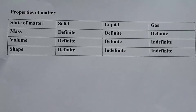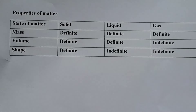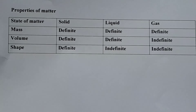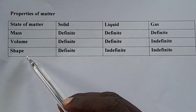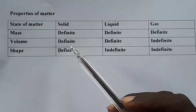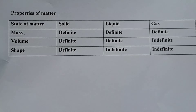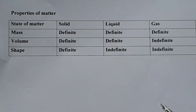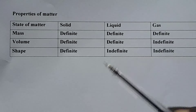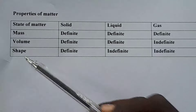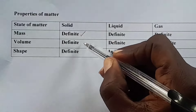So we have seen the states of matter and that they are interconvertible. Now let's look at the properties of matter. The three states of matter are solid, liquid, and gas. During the exam you can be asked to give two properties of a solid, gas, or liquid. The properties we consider are mass, volume, and shape. For solids: they have definite mass, definite volume, and definite shape.